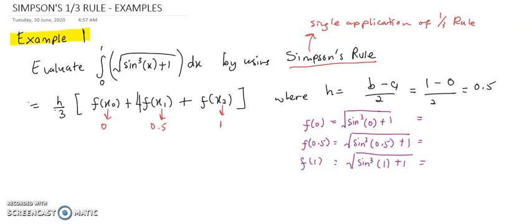After that, you need to calculate the values of f(0), f(0.5), and f(1). So f(0) is 1, f(0.5) is 1.0537, and f(1) is 1.2633.